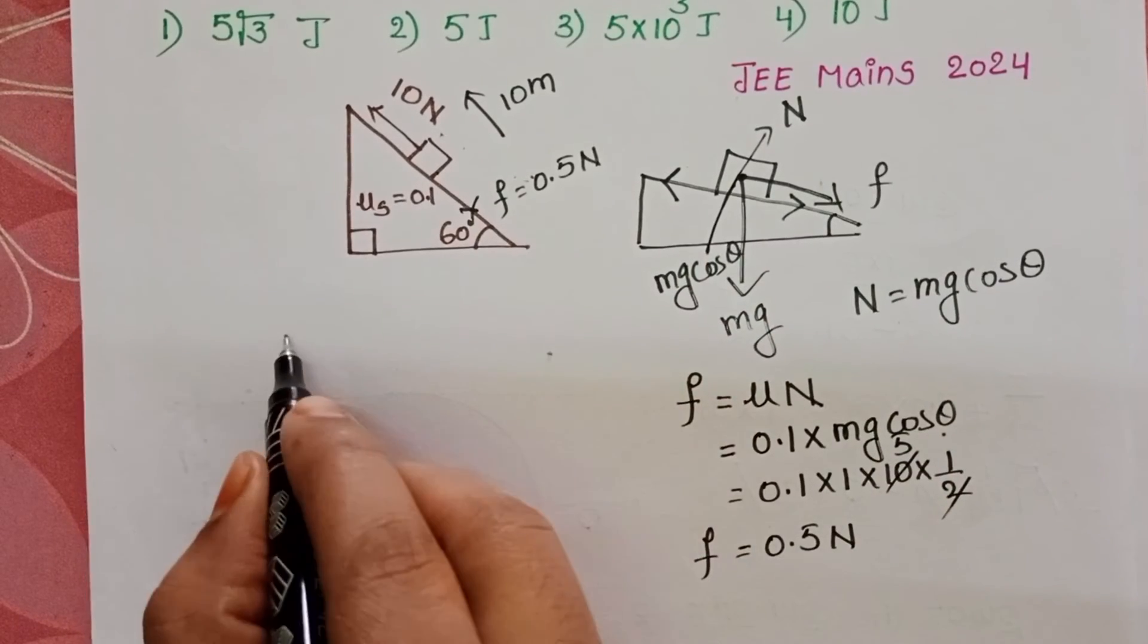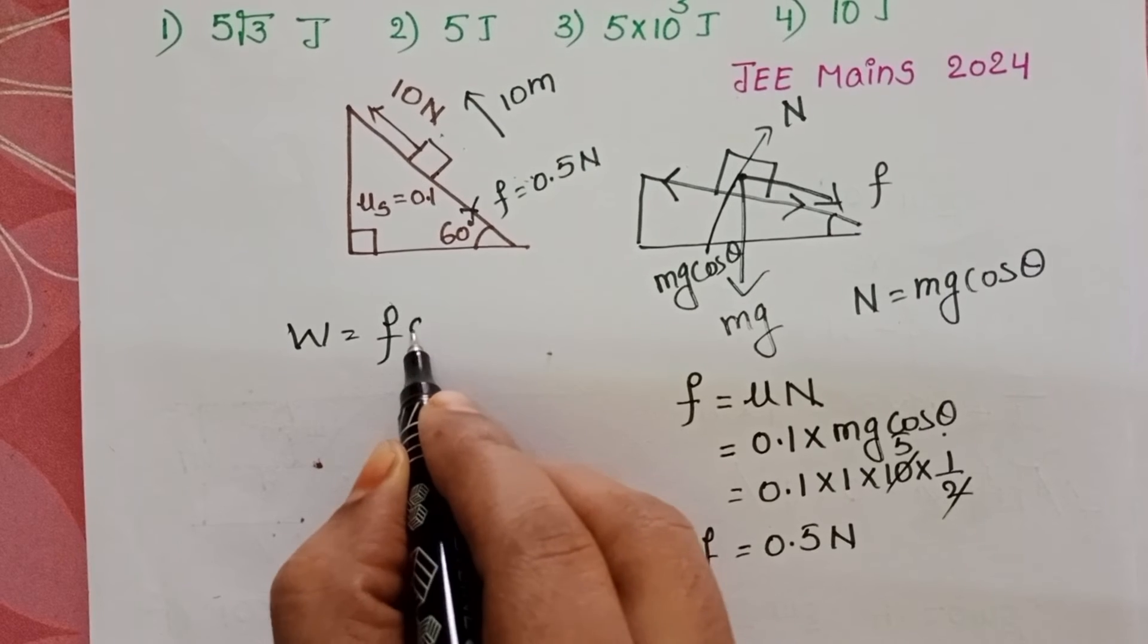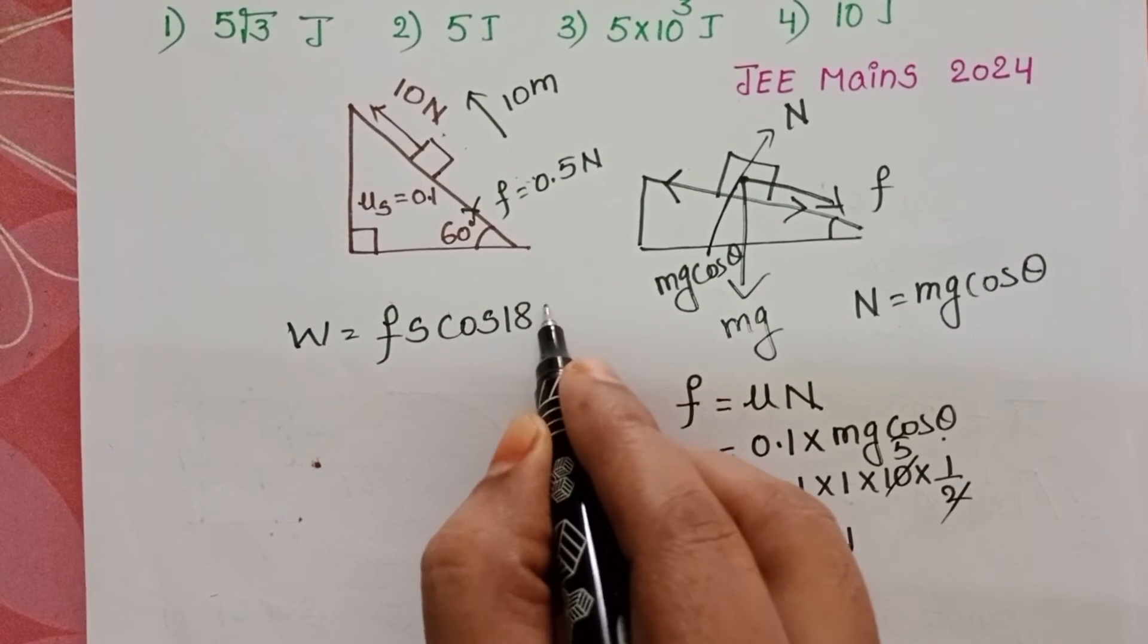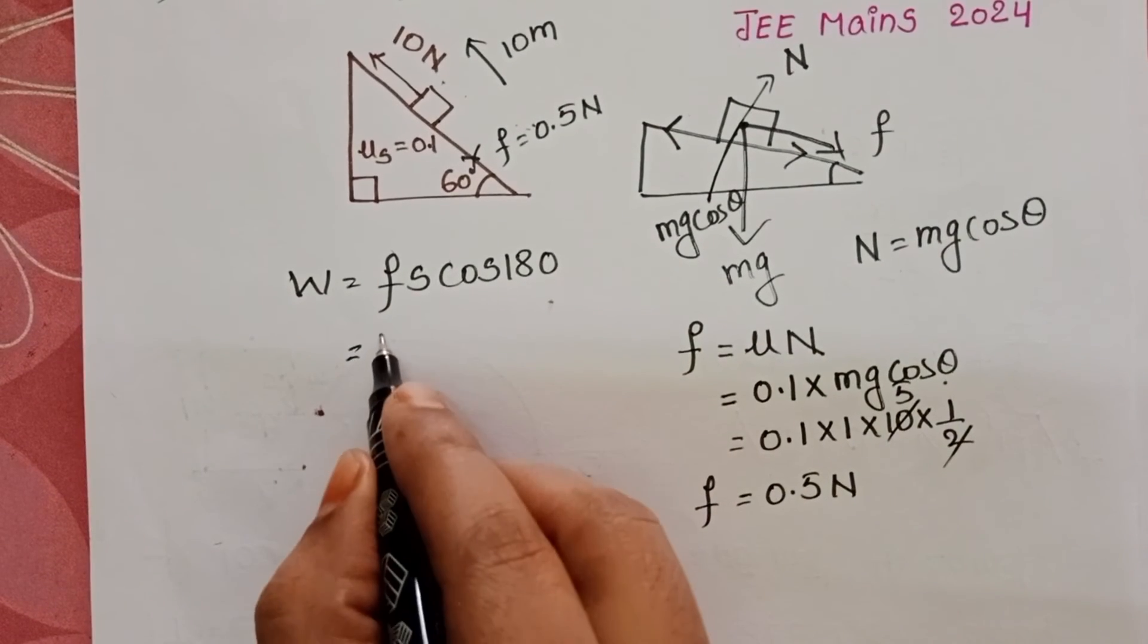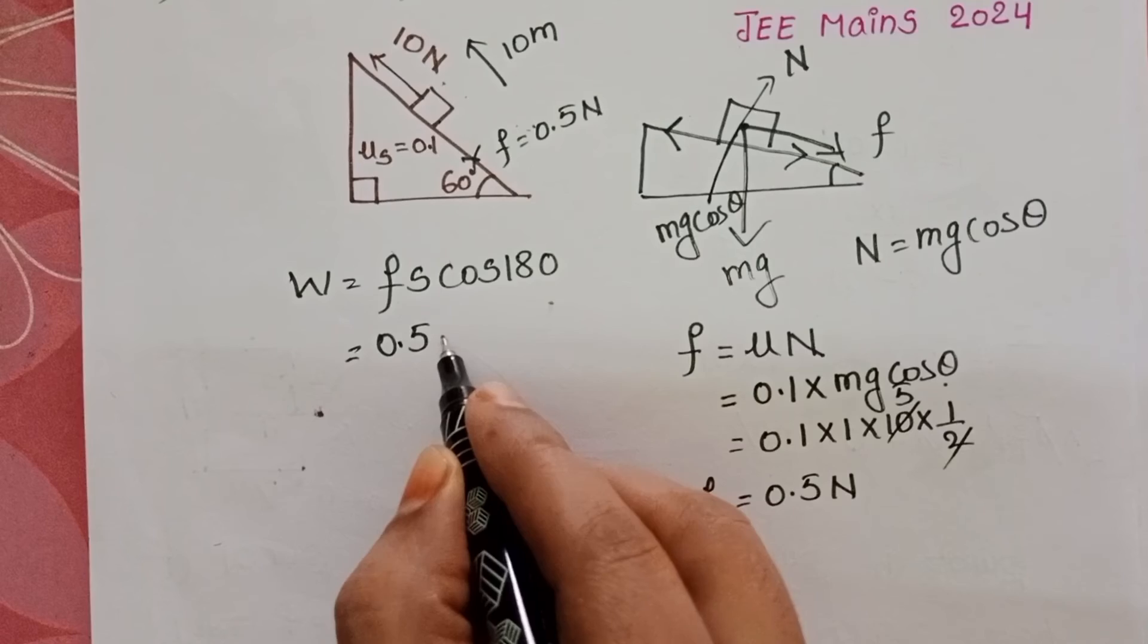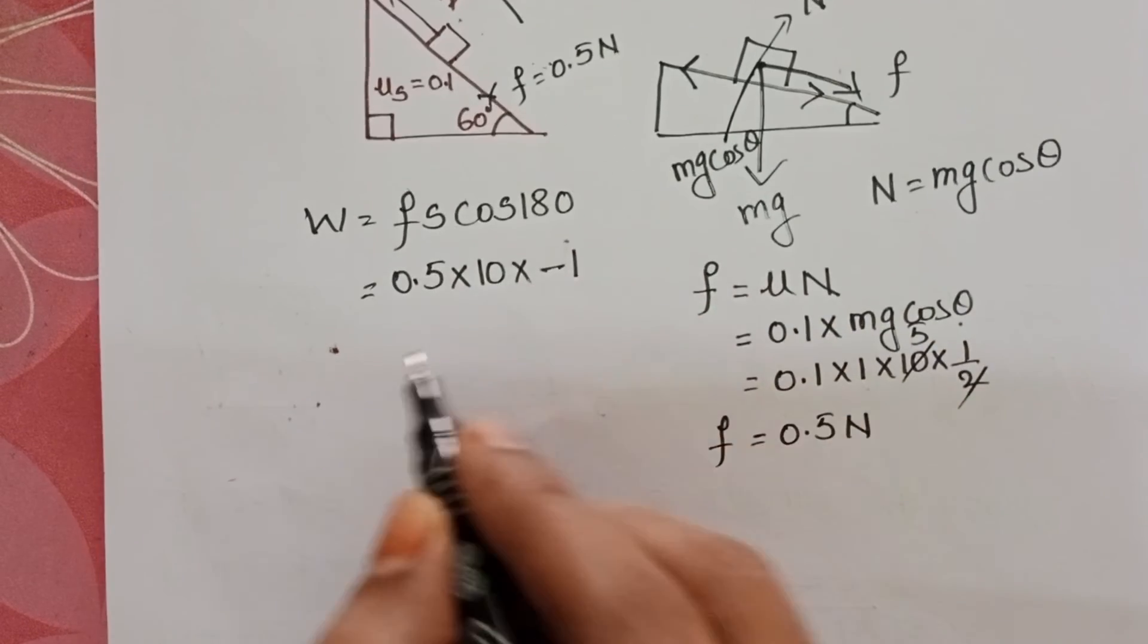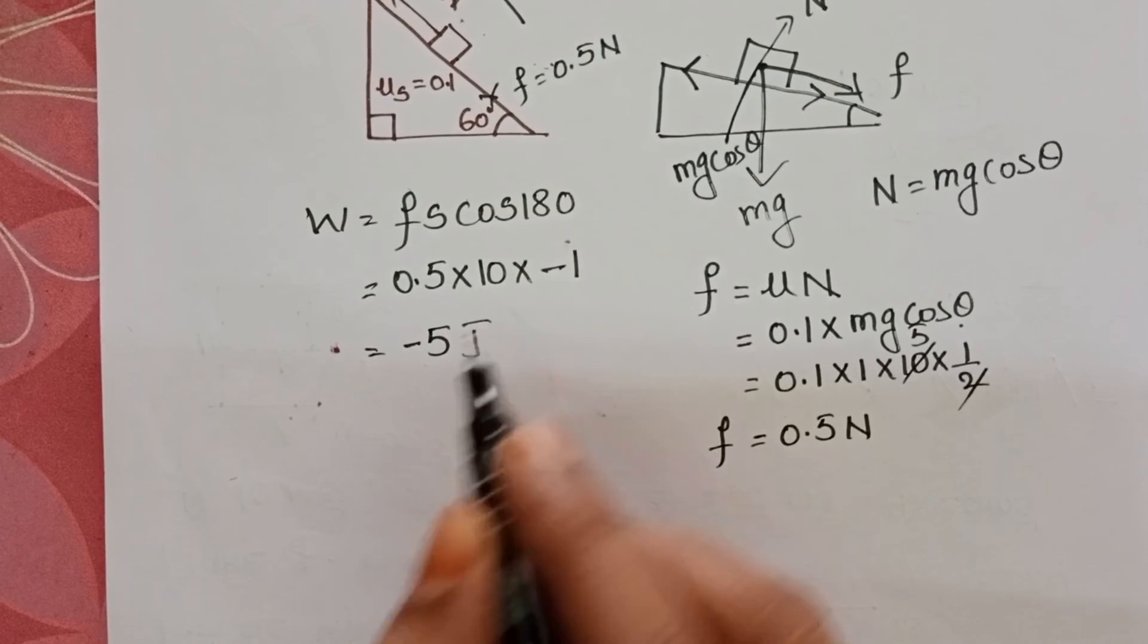Work done against the frictional force is equal to F·s cos θ. θ is 180 degrees because both are acting in opposite directions. Frictional force is 0.5, given distance is 10 meters, cos θ value is -1. So that equals -5 joules.